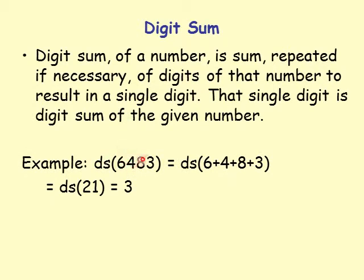Let's look at the number 6483 and compute its digit sum. We add the digits together: 6 plus 4 plus 8 plus 3. When I add these numbers up I get two digits — 6 plus 4 is 10, 10 plus 8 is 18, 18 plus 3 is 21. Since I want a single digit, I do the digit sum of 21.